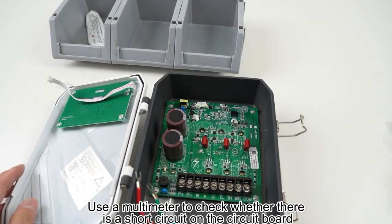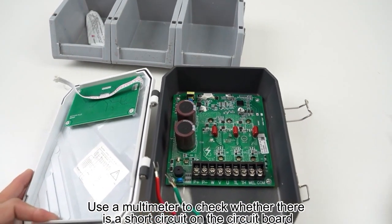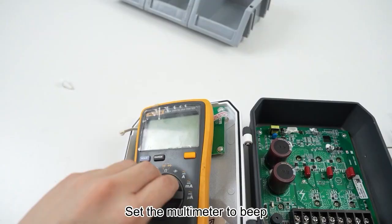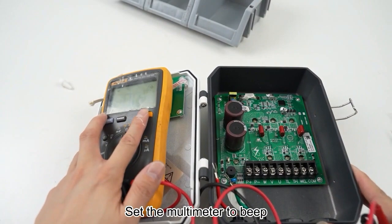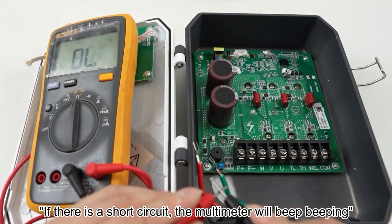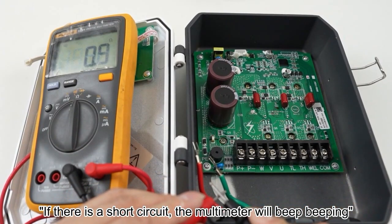Use a multimeter to check whether there is a short circuit on the circuit board. Set the multimeter to beep. If there is a short circuit, the multimeter will keep beeping.